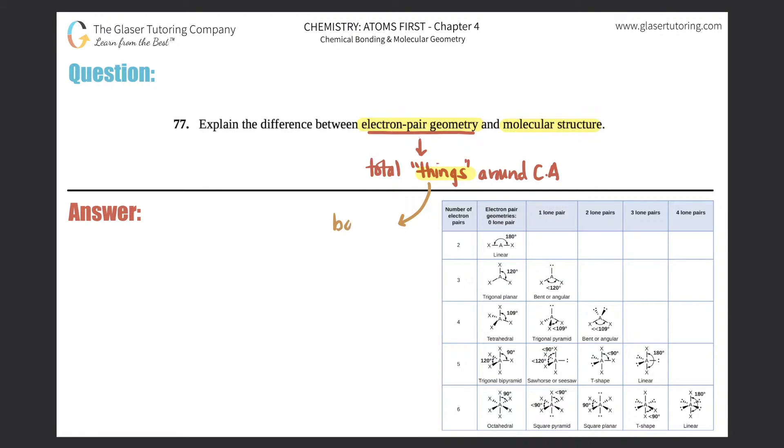You could either have bonds like a single bond, a double bond, a triple bond, or you could have lone pairs. And together, the bonds and the lone pairs make up the total number of electron pairs.